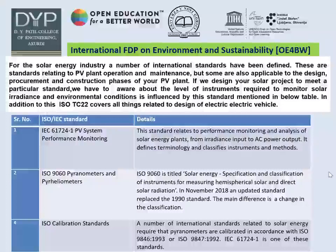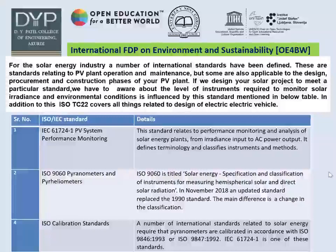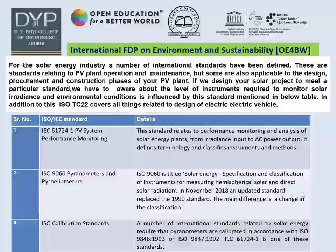IEC 61724-1 defines terminologies and classifies instruments and methods. ISO 9060 is titled Solar Energy — Specification and Classification of Instruments for Measuring Hemispherical Solar and Direct Solar Radiation. In November 2018, an updated standard replaced the 1990 standard, with the main difference being a change in classification. A number of international standards related to solar energy require that pyranometers are calibrated in accordance with ISO 9846:1993 or ISO 9847:1992. IEC 61724-1 is one of these standards. These standards give an overview of solar systems and solar electric panels.